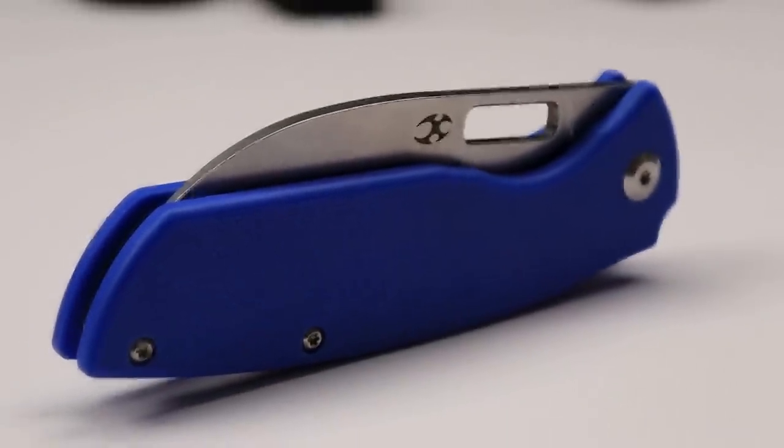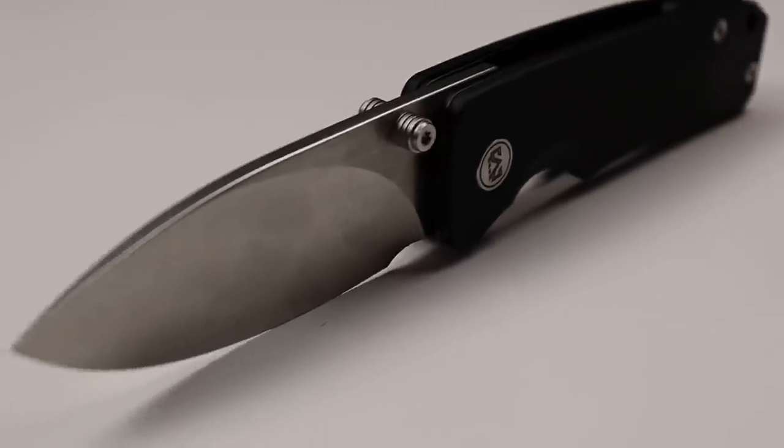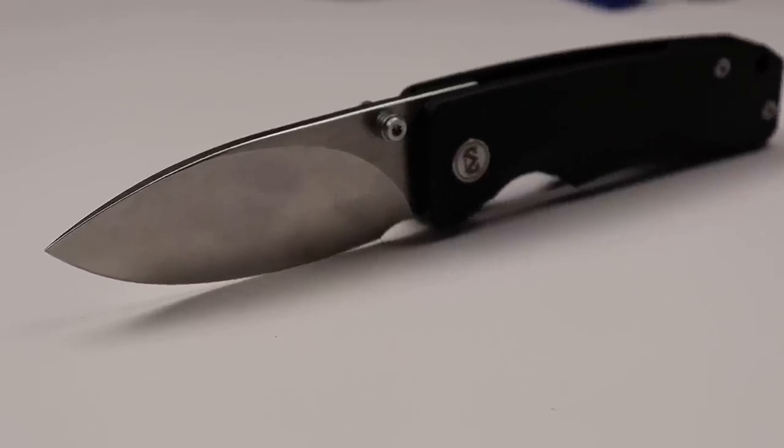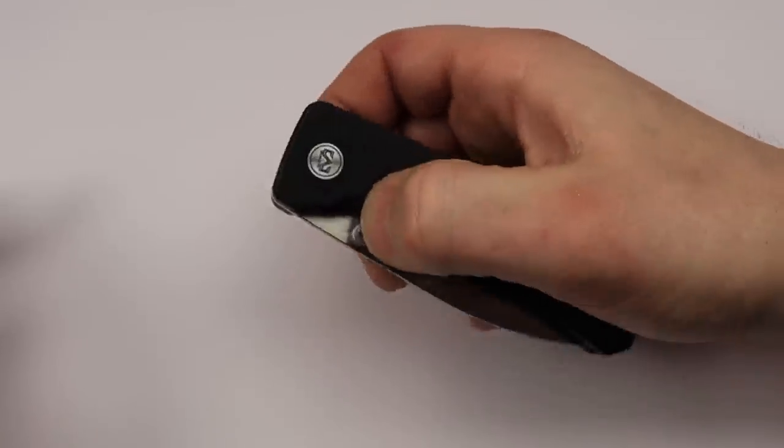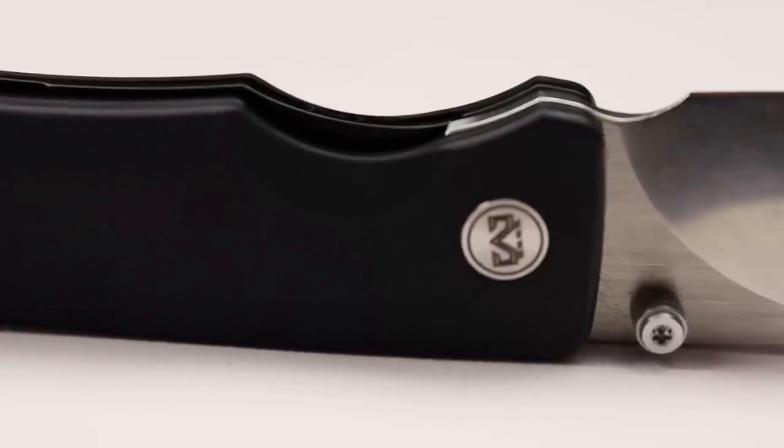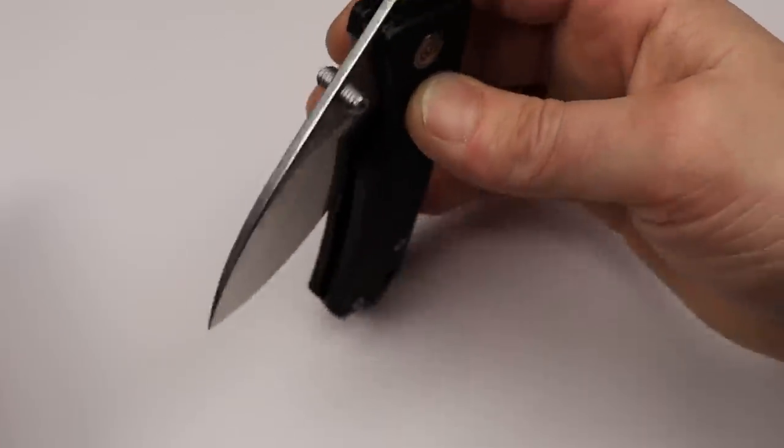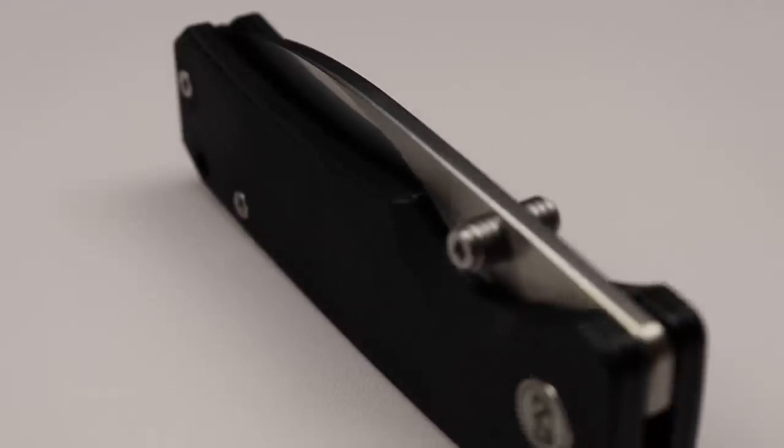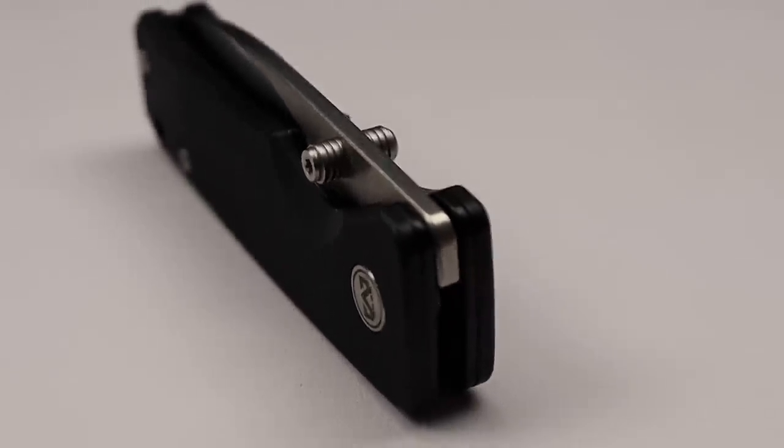Now, next is the Migeron Pallora in 14C28N, great steel. G10 scales, steel liner lock. Good access to the lock bar. And it is very, very smooth. The thumb studs are very easy to get to. This thing rockets out, man.